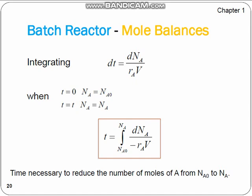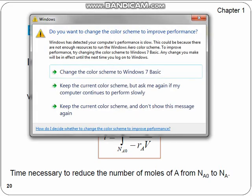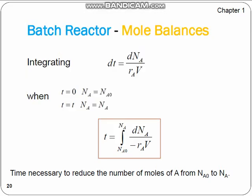So when we apply this, we want to calculate the time which is necessary for the processing in a batch reactor, and we would use this equation, and we would integrate it between NA0 to NA, which is the final number of moles. Here it says time necessary to reduce the number of moles of A from NA0 to NA, which is basically the processing time in a batch reactor.